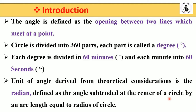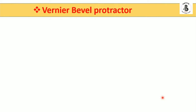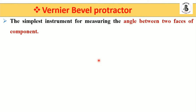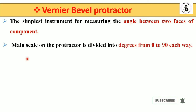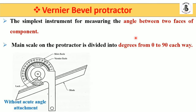The vernier bevel protractor is the most simple instrument for measuring the angle between two faces in the workshop or any kind of components. The main scale on the protractor is divided into degrees from 0 to 90 degrees each way, or from both sides. This is the bevel protractor without the acute angle attachment.